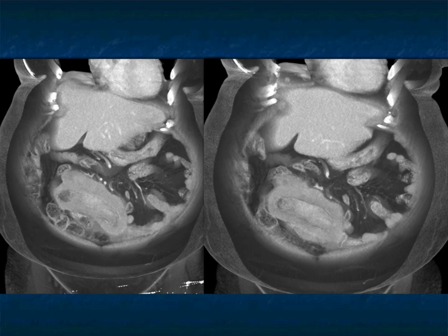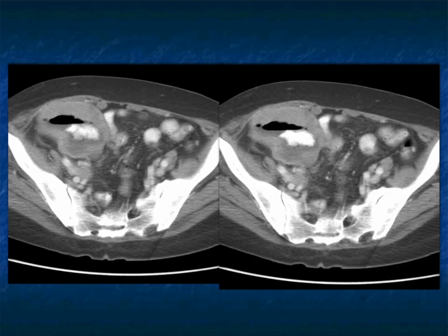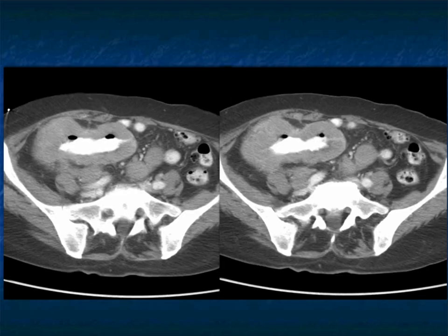Here are some images with contrast in the lumen. These tumors can also bleed. Another example — a bulky tumor with positive contrast involving the small bowel. Less likely adenocarcinoma because of its bulkiness. Classic location: terminal ileum into cecum, very nicely shown. B-cell lymphoma with stranding in the mesentery.